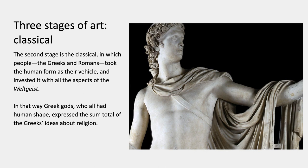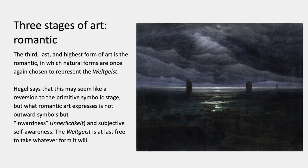The second stage he calls classical. The second stage is the classical, in which people like the Greeks and Romans took the human form as the vehicle to help them express their idea, and they invested the human form with all the aspects of the Weltgeist, the world spirit. Greek gods all had human shape and they expressed the sum total of the Greeks' ideas about religion.